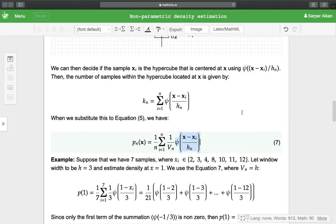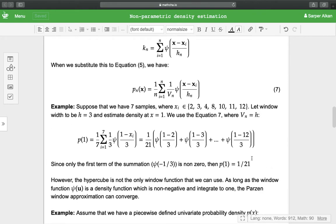For example, suppose that we have 7 samples where the samples are 2, 3, 4, 8, 10, 11, and 12. Let the window width be h = 3, and we would like to estimate density at x = 1. So when we use equation 7, where vn equals h because this is one dimensional.